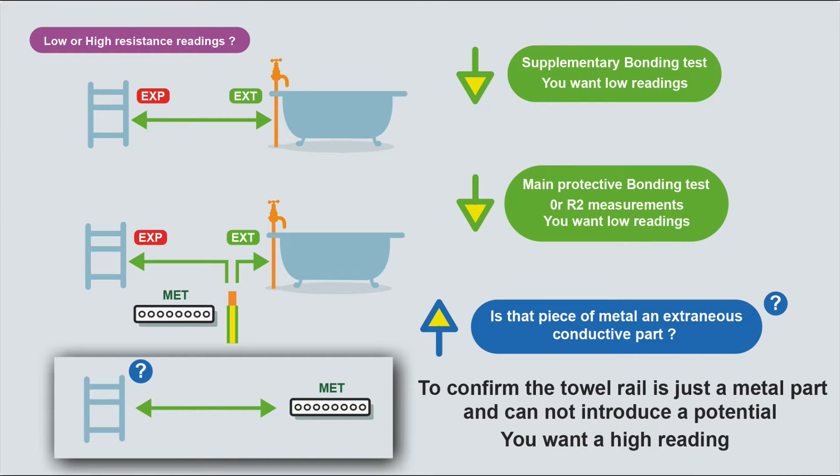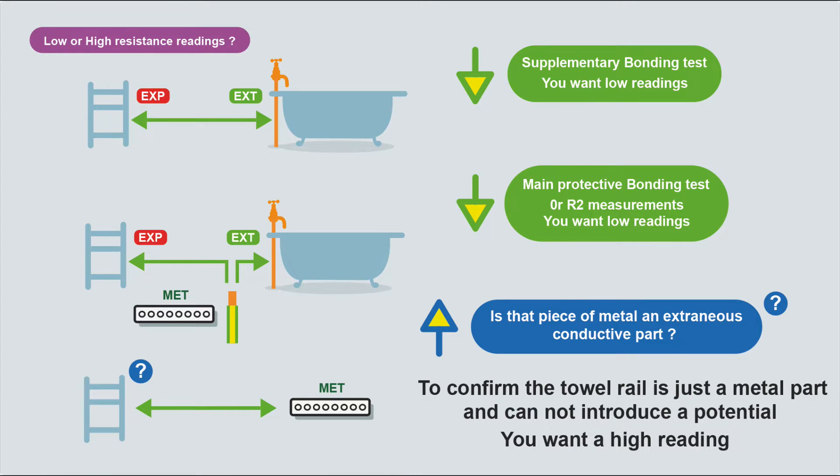We want high resistance if you want to prove that something is not an extraneous conductive part. We want to know that there's no connection to earth, so we want a high resistance reading between that part and the MET.